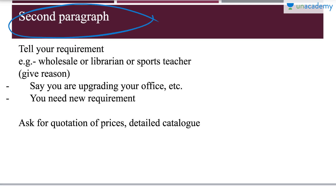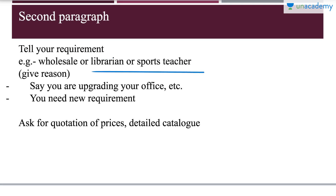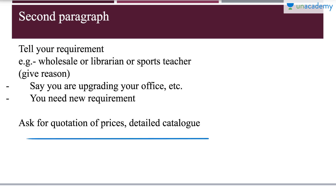In the second paragraph, you will tell your requirement and also state your reason. For example, a librarian or a sports teacher can say that you are upgrading your office and need new furniture for it, or you are upgrading the sports equipment at school and need new requirements for it. Next, you will ask for a quotation of the prices and a detailed catalogue.